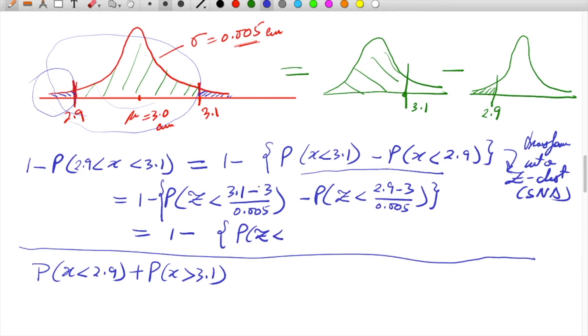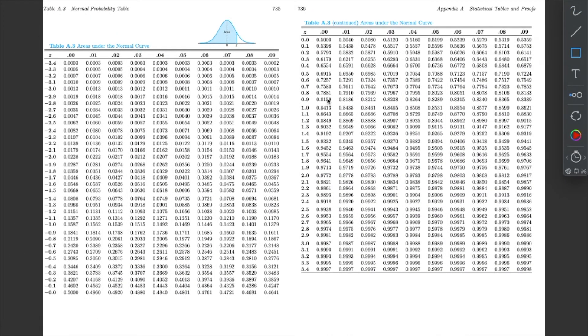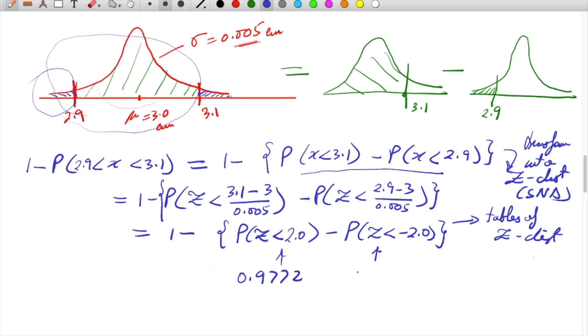If we go to tables of the z distribution, for z equal to 2.0 there is no second digit value, so it will be at this particular location: 0.9772. For minus 2.0, it is 0.0228.